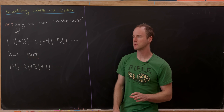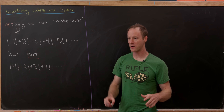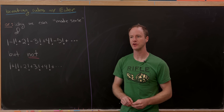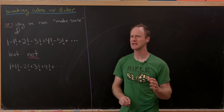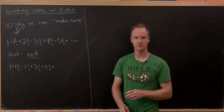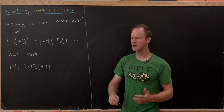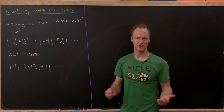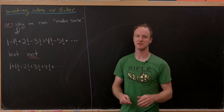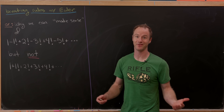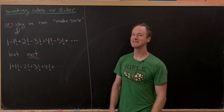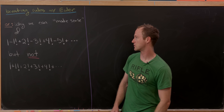Here we're going to look at an example of Euler where he bent the rules to assign a value to a clearly divergent series. And then we're going to compare it with another clearly divergent series that looks very much related, but you can't assign a value to it. So let's see exactly what we're talking about.